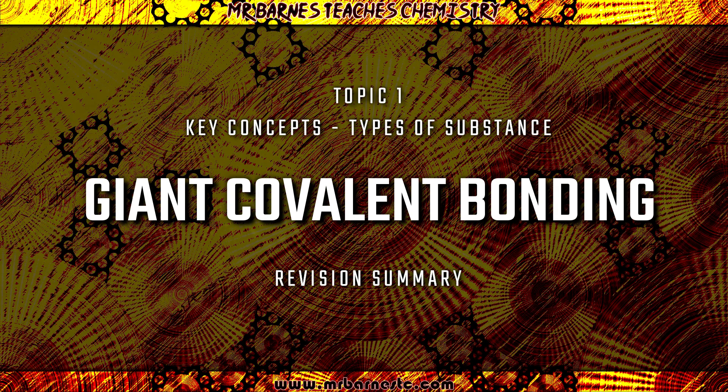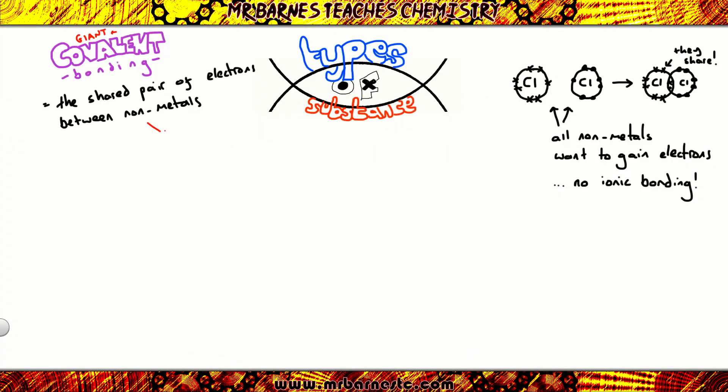Moving on to giant covalent compounds then. Nice and simply these have lots of strong covalent bonds, bearing in mind simple covalent only had a few. We've got a lot of covalent bonds here. This gives every giant covalent compound high melting points because lots of energy is needed to break those strong covalent bonds. Now the key examples of giant covalent compounds you need to know are all allotropes of carbon. An allotrope is something that's all made of the same element, carbon, but that has different structures. The main ones being diamond and graphite.